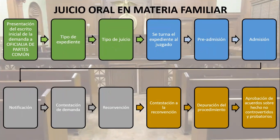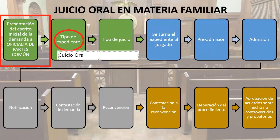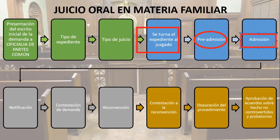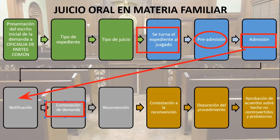Presentamos nuestro escrito de demanda en la Oficialía de Partes Común. Se va a turnar a un juzgado que va a calificar si admite, previene o desecha. En el caso de admisión, continuamos con la notificación a la parte demandada, quien va a dar contestación a la demanda. Podrá presentar reconvención, y en ese caso vamos a dar contestación a la reconvención. Con esto concluimos la etapa postulatoria.